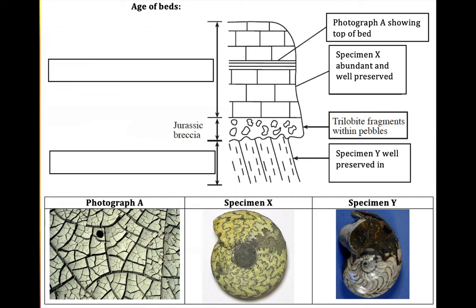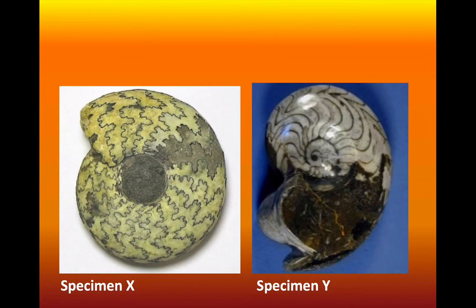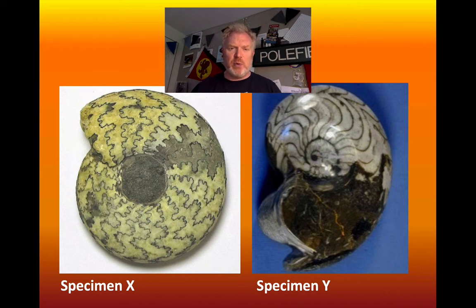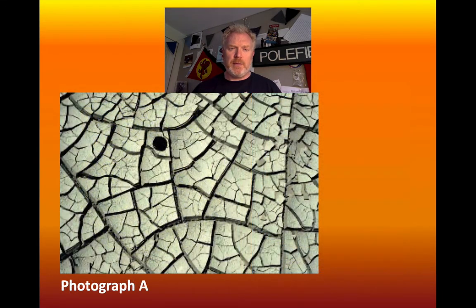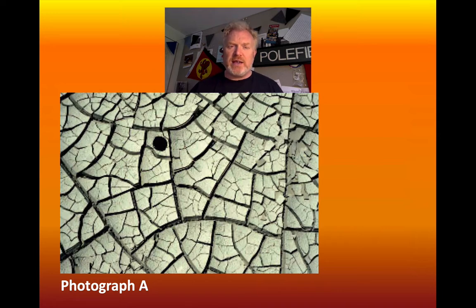Let's start by having a look at some of the things we can find in this sequence. These are photographs of specimen X and specimen Y. We can see that they both have the distinctive coiled shell of a cephalopod, and we've also got some suture lines visible, so you need to work out what type of cephalopod we're looking at. This is photograph A, showing the top surface of a bed. We're seeing a sedimentary structure there — something we talked about back in Theme 4 — so perhaps we need to work out what that is and the significance of it being on the top of the bed.